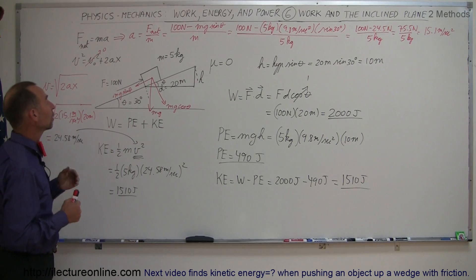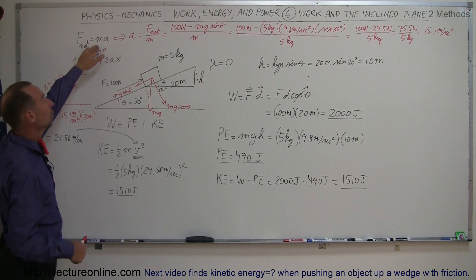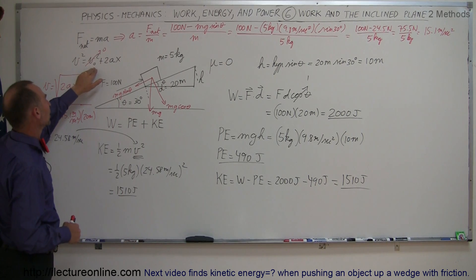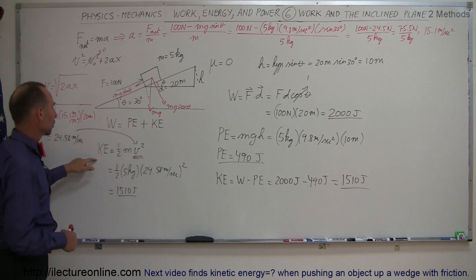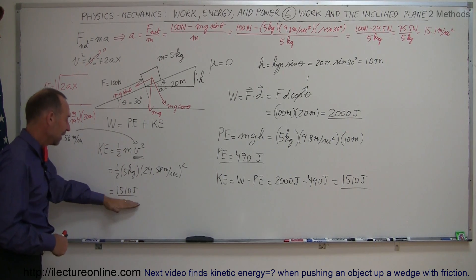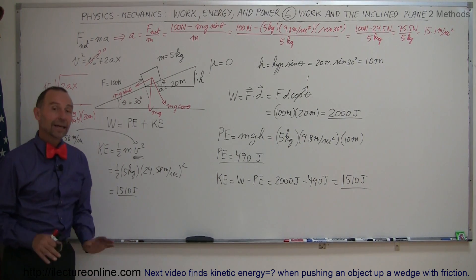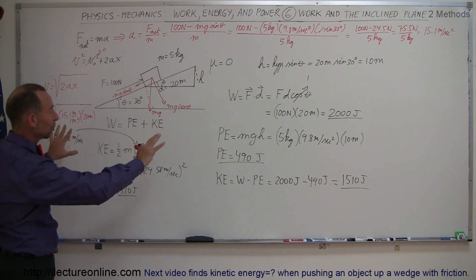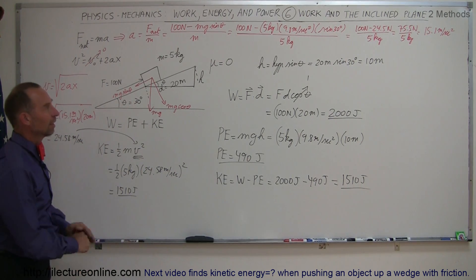And then instead, we can also find acceleration using Newton's second law principles, then plug that back into our equation of kinematics that doesn't require time, find the velocity, plug into our equation 1 half mv squared, and we get the exact same number. Again, of course, this is easier to do, but it's good to see that you can do it both ways to get the full understanding of how this works.